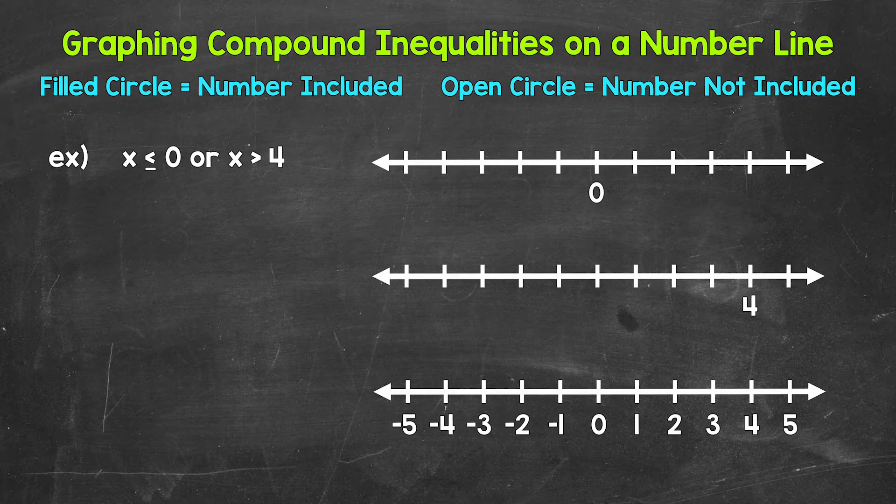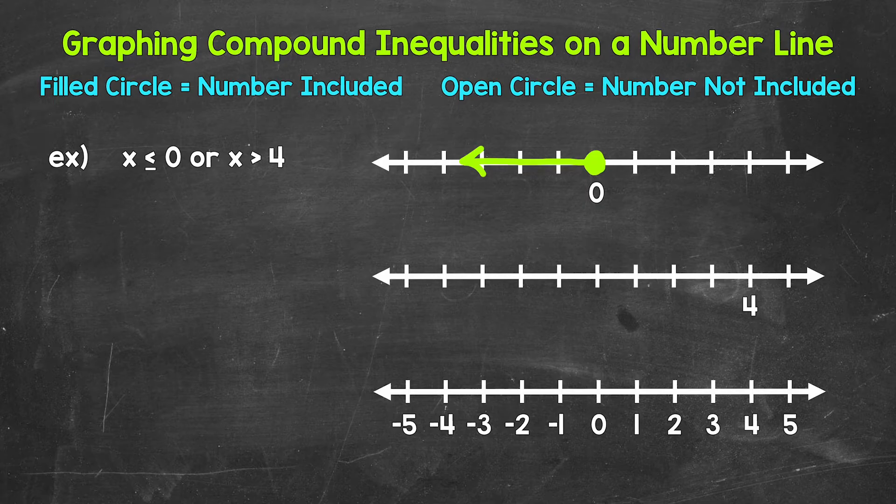Let's start with x is less than or equal to 0 and just focus on that. Now 0 is included so we need a filled circle at 0 and then an arrow going left representing everything less than 0. So 0 is a solution and anything less than 0.